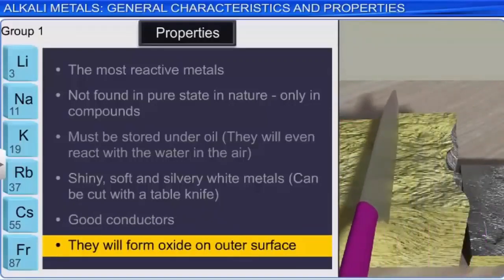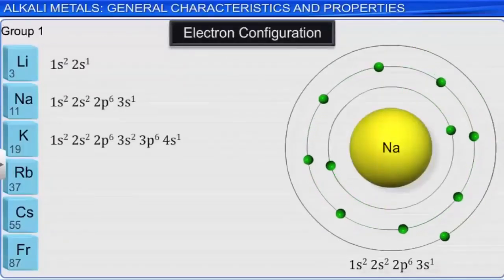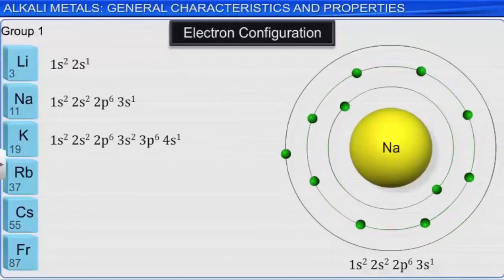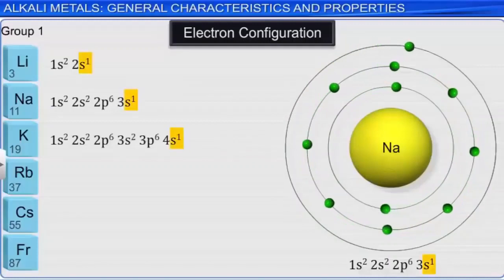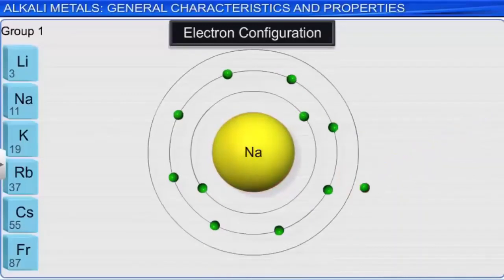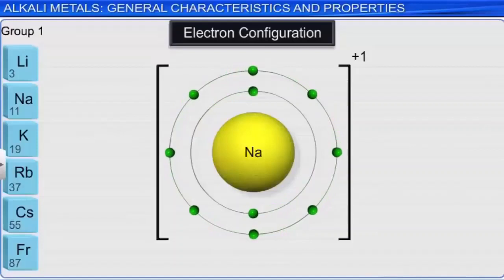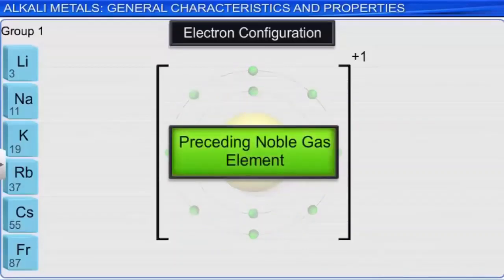The alkali metals all have electron configurations ending in s1. The single valence electron for each of these elements is relatively loosely attracted to the nucleus. If this sole valence electron is lost, the resulting ion is isoelectronic with the preceding noble gas element—having the same number of electrons as that noble gas. Thus, the typical ion formed by an alkali metal is a cation with a charge of +1.